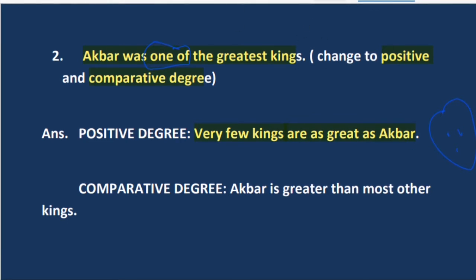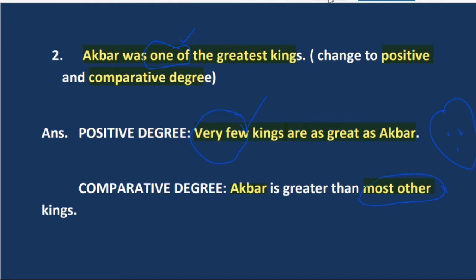In case of sentences using 'one of' in the superlative degree, where a few others are equally good, we use 'very few' or 'most other.' In the comparative degree, since 47 or 48 out of 50 kings are lesser than Akbar, we write: Akbar is greater than most other kings. We must remember to use 'very few' and 'most other' for the positive and comparative cases when 'one of' is present.